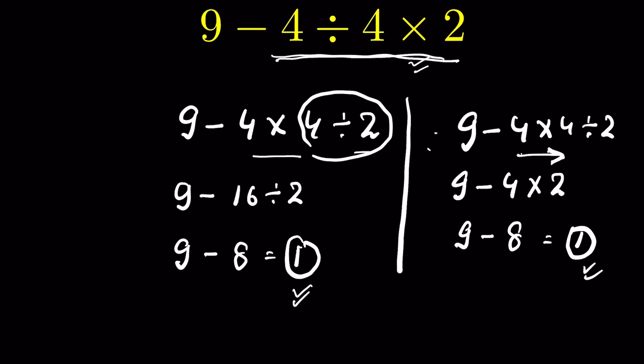So even though you are getting 1 in this method also, this is not the correct method—you will get stuck when there is a different kind of question and different operation is first. For more such videos, like and subscribe. Thanks for watching.